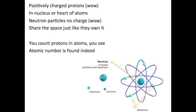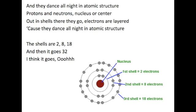Positively charged protons, in nucleus or heart of atoms. Neutron particles, no charge, share the space just like they own it. You count protons in atoms, you see, atomic number is found indeed.